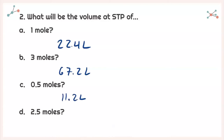What about 2.5 moles? That's gonna be somewhere between 1 mole and 3 moles. You can take the volume of 3 moles and subtract the volume of 0.5 moles to get 2.5 moles — whatever method you choose, as long as you get a volume of 56.0 liters for 2.5 moles.